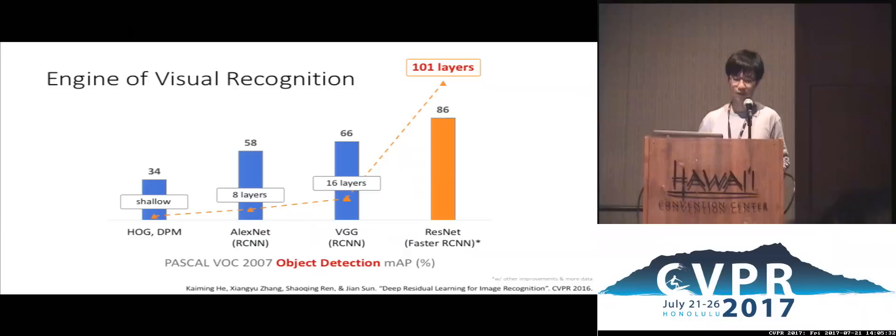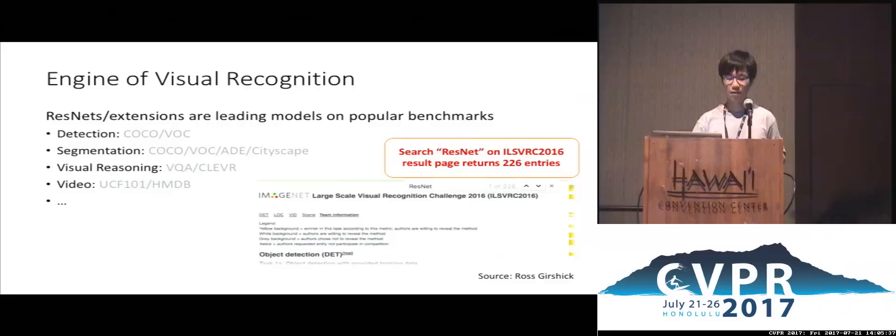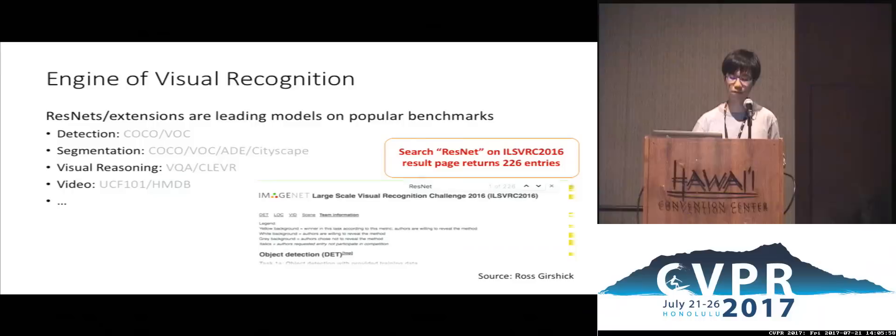Currently, ResNet and its extensions are the leading models for many popular visual recognition benchmarks, such as object detection in COCO and VOC, semantic segmentation and instance segmentation in COCO, VOC, ADE, CityScape, and many other datasets. It has also been applied to extract visual features for visual reasoning such as VQA or CLEVR, and can be used to improve video understanding.